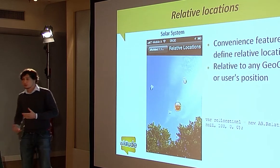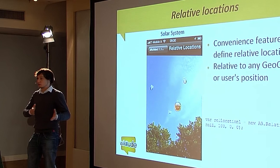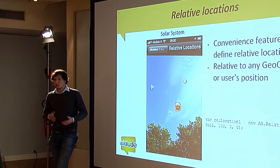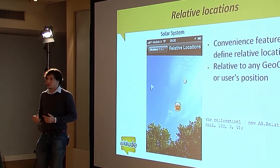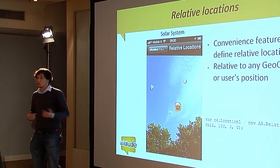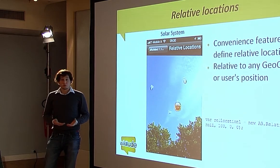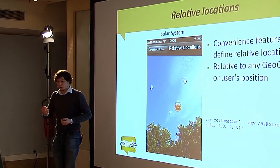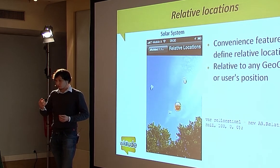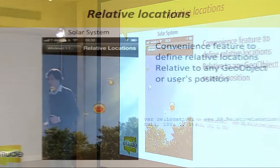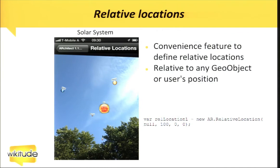Besides geo location using absolute positioning via latitude and longitude, you also have the possibility to put objects relative to the user or to another location. This is often useful because you want to say, for example, at a certain latitude/longitude but relative 100 meters to the east or the north.